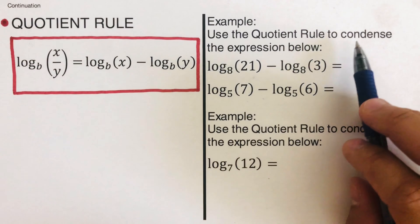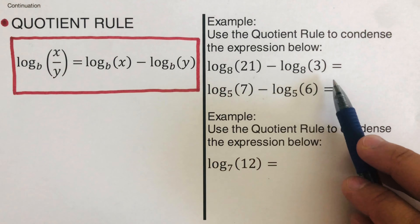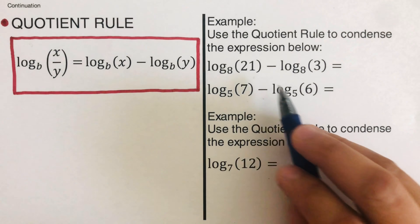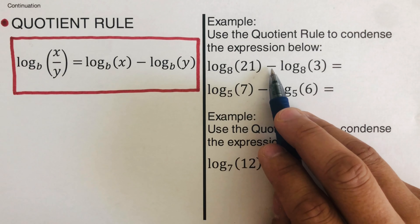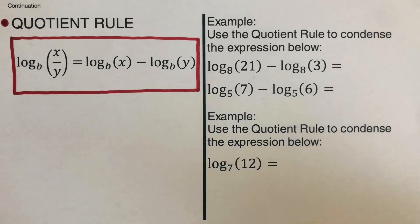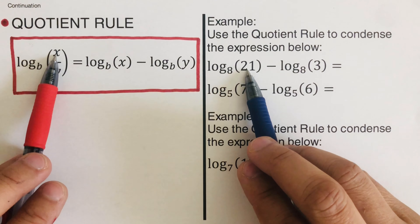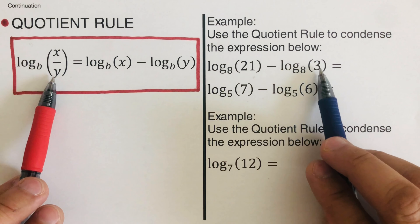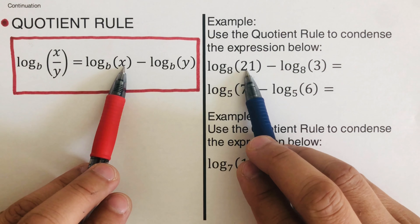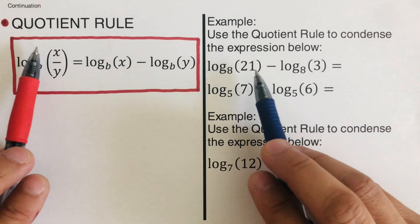Let's condense these two examples — collapse them into one logarithmic expression. Since this involves subtraction, we divide. The first term acts as x and the second term acts as y in our quotient rule formula.